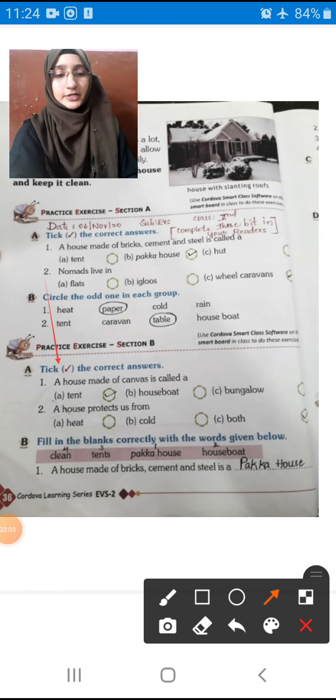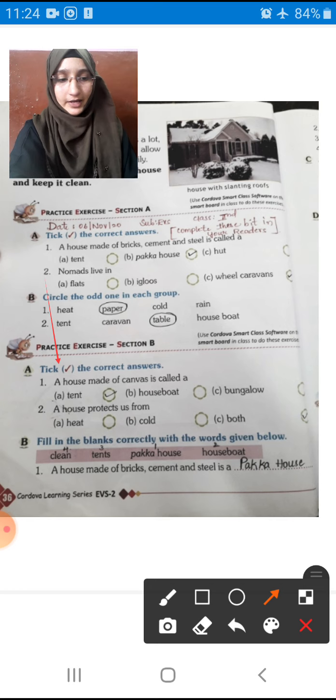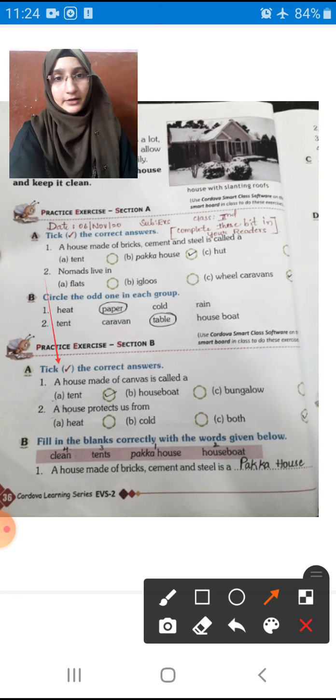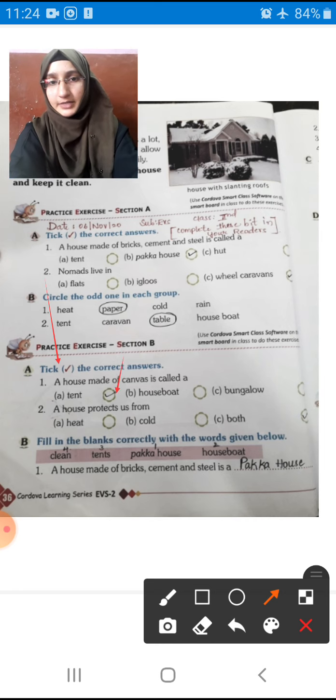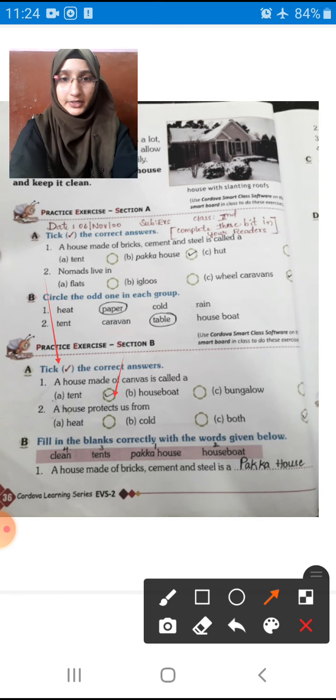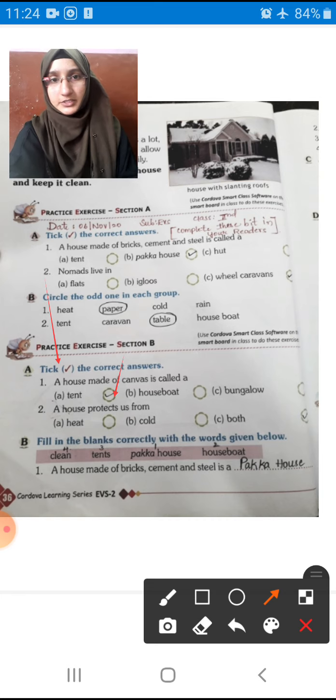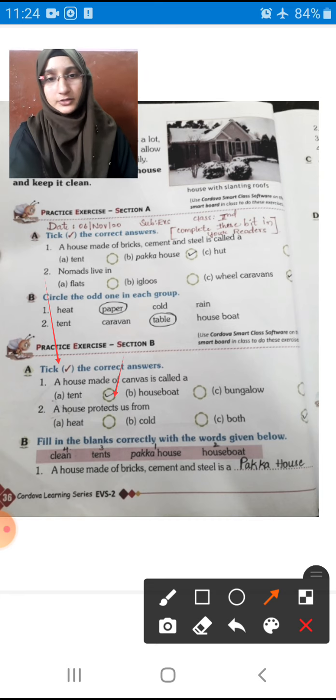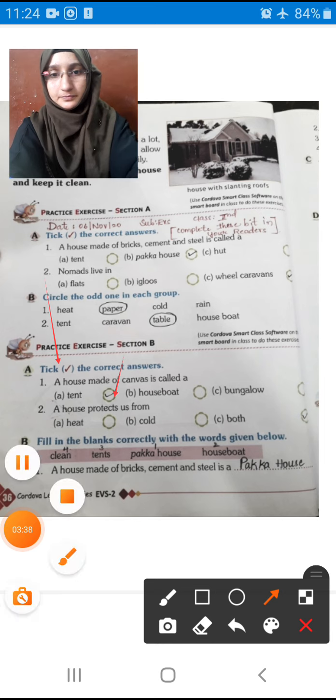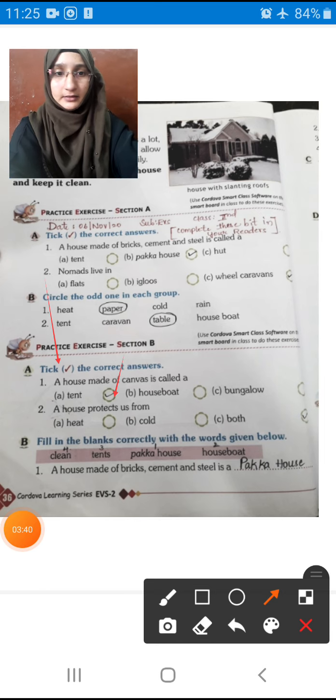A house made of canvas is called? We call it tent. So you have to put the right mark in the first circle. A house protects us from: heat, cold, or both? Heat, cold and both. Obviously, it protects us from both heat as well as cold children. So we have to write heat and cold both. Put the right mark in third circle children.